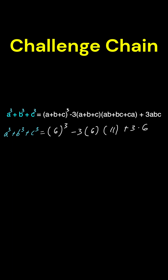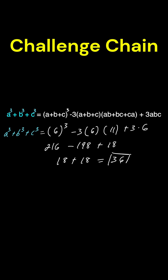So let's simplify. 6 cubed equals 216. Negative 3 times 6 is negative 18; multiply that by 11, you're going to get negative 198. So minus 198, plus 6 times 3 is 18. 216 minus 198 is 18, plus another 18 equals 36.